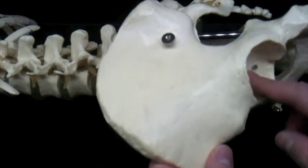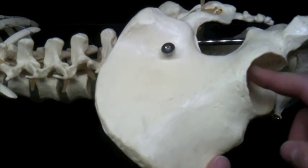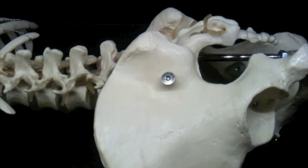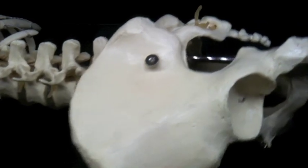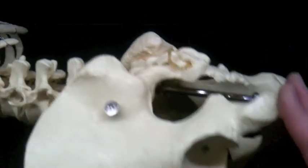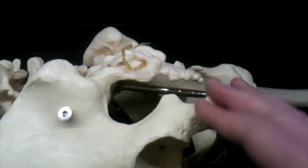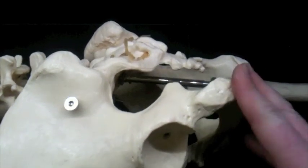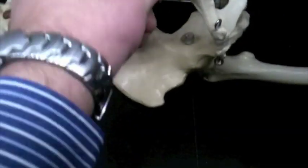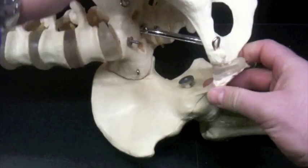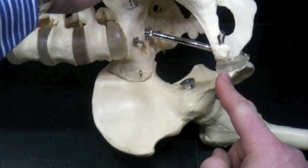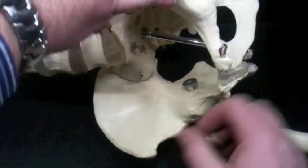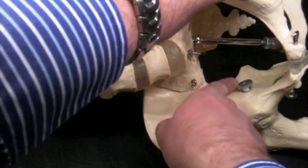Right down here, these are our ischial tuberosities that we sit upon, your sit upon bones. This joint in the front where the two pubic bones meet is known as the pubic symphysis. We also have on the ischia these spines that poke into the pelvic cradle or pelvic girdle.